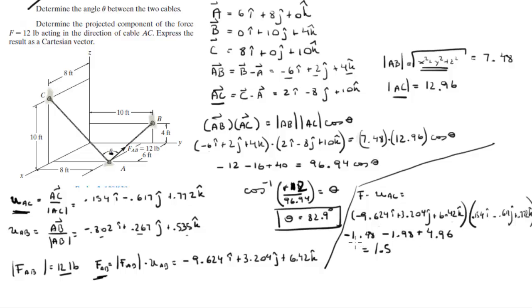This 1.5 is the projection of AB onto AC, so it has a magnitude of 1.5.